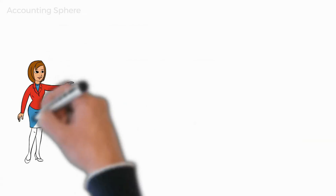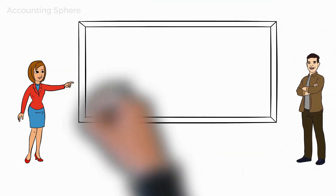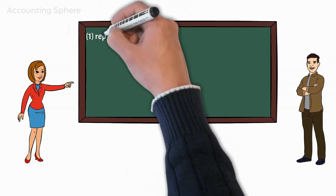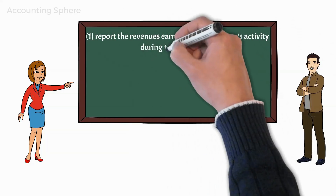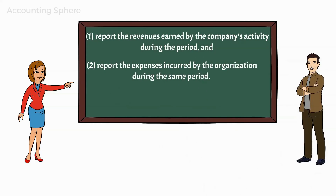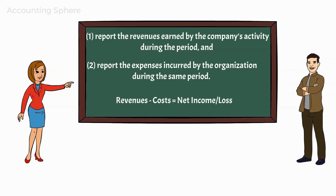Marianne explains to Michael that the income statement is a little more difficult than she just described, but for now she simply wants Michael to understand some fundamental accounting principles and terminology. She is making sure that Michael knows one important point that many seem not to understand. An income statement's goal is to: one, report the revenues earned by the company's activity during the period; and two, report the expenses incurred by the organization during the same period. The income statement's objective is to indicate a company's profitability over a certain time period, and the difference between the revenues and costs is generally referred to as the bottom line, and it is named as net income or net loss.